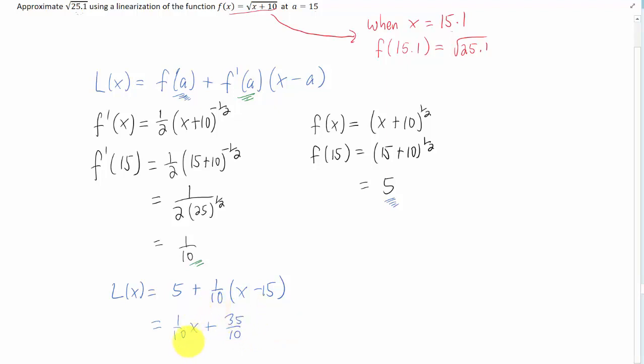What we're saying now is that this line approximates the original given function when a or our x value is near 15. So I wrote that down right here, and this is important because if we want to find the square root of 25.1, what we'd have to do with this formula is plug in an x value of 15.1. That's what we said when we started this video.